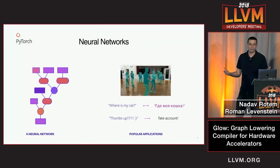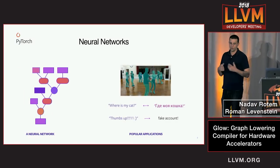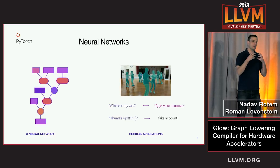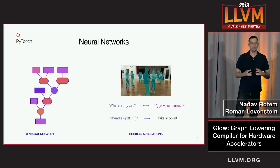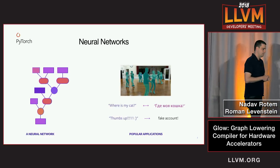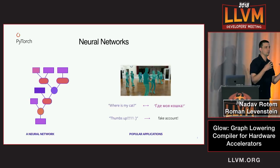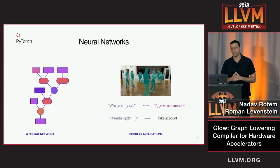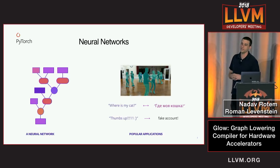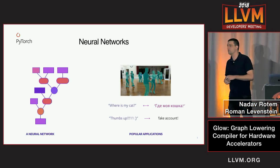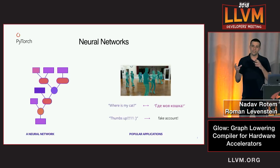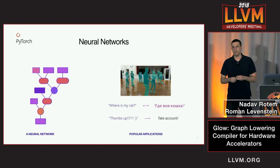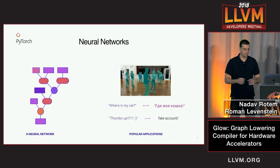What are neural networks? Neural networks are graphs where each node in the graph is some mathematical operation that works on matrices. You can think of things like matrix multiplications and convolutions. Neural networks can be trained to do cool things like detecting things in images or translating text between different languages.